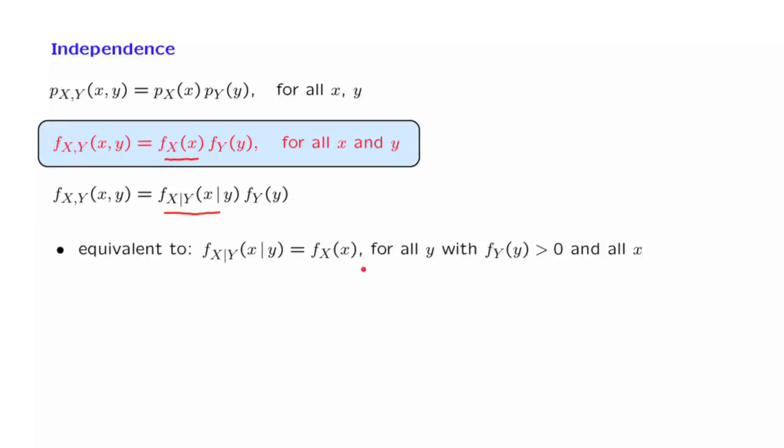So to restate it, independence is equivalent to having the conditional given y be the same as the unconditional PDF of x, and this has to be true whenever y has a positive density, so that this quantity is well defined, and it also has to be true for all x's.